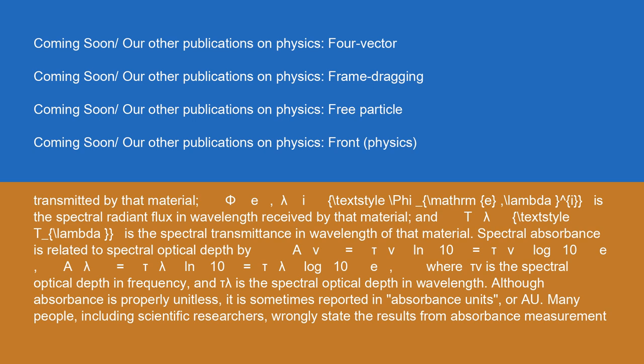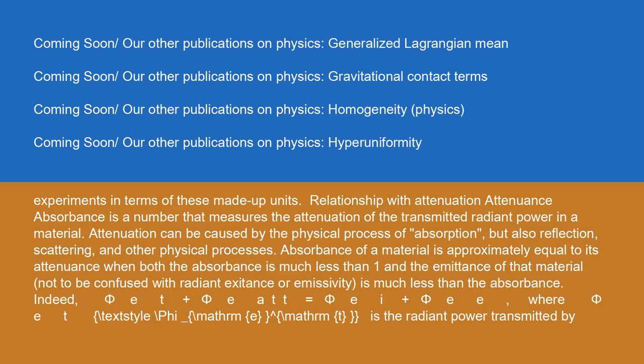Although absorbance is properly unitless, it is sometimes reported in absorbance units (AU). Many people, including scientific researchers, wrongly state the results from absorbance measurement experiments in terms of these made-up units. Absorbance is a number that measures the attenuation of the transmitted radiant power in a material. Attenuation can be caused by the physical process of absorption, but also reflection, scattering, and other physical processes.